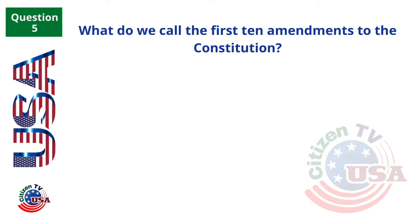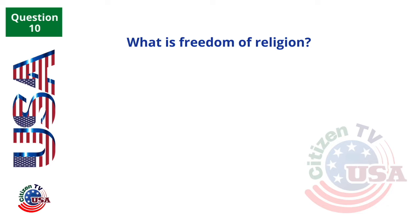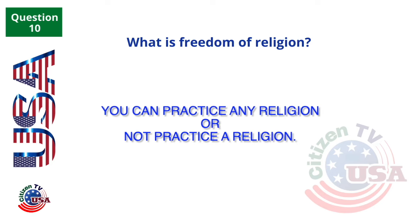What do we call the first ten amendments to the Constitution? The Bill of Rights. What does the judicial branch do? Reviews laws. What is freedom of religion? You can practice any religion or not practice a religion.